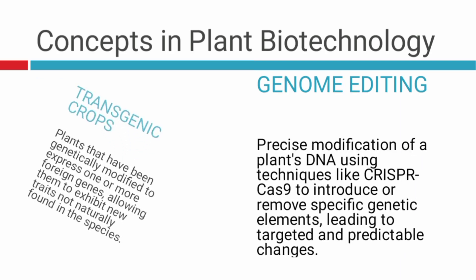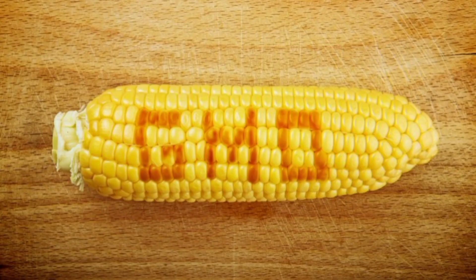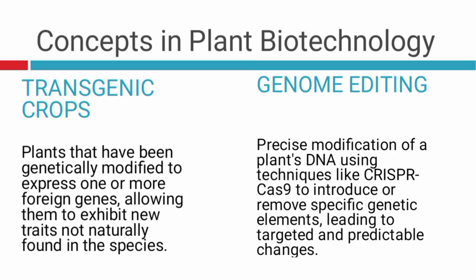Transgenic crops: any crop that has been modified is called a transgenic crop. You can also call them GMOs — genetically modified organisms — or GM. So if I say this is GM rice, I'm telling you the rice has been genetically modified; in other words, it is a transgenic crop. Genome editing uses tools like CRISPR-Cas9 — imagine using scissors to cut a piece of fabric and inserting something else. Scientists use enzymes like Cas9, which act as molecular scissors, to cut and edit the genome.